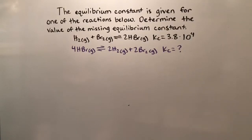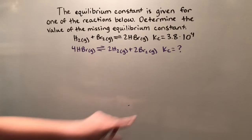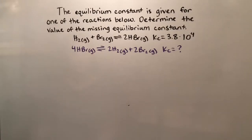Hi everyone. Today we're going to be working on this problem. The equilibrium constant is given for one of the reactions below. Determine the value of the missing equilibrium constant. We're given this equation and its manipulated equation, and we're asked to find the Kc for the manipulated equation.